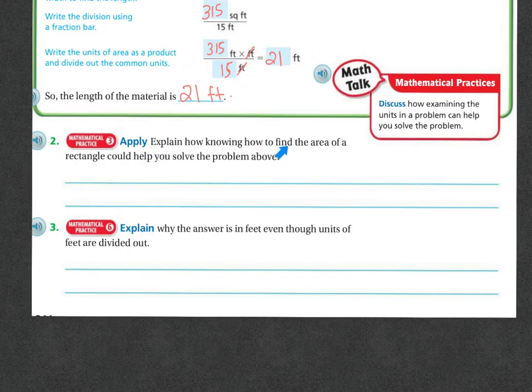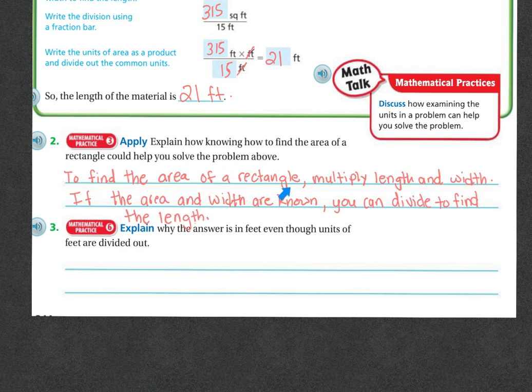Apply: Explain how knowing how to find the area of a rectangle could help you solve the problem above. To find the area of a rectangle, you multiply the length times the width. So here's my area. I multiply the length times the width. And if the area and width are known, then you can divide to find the length.